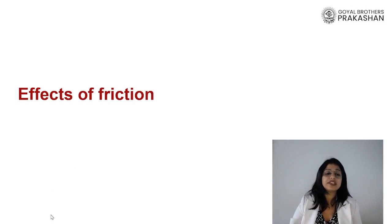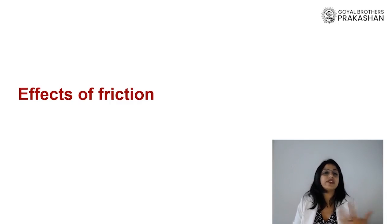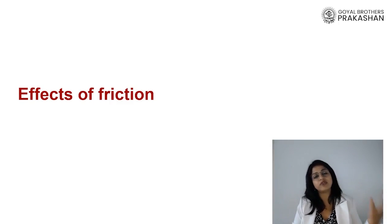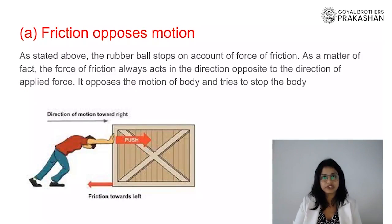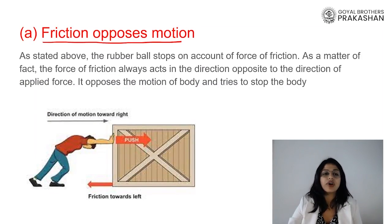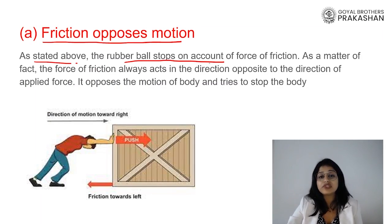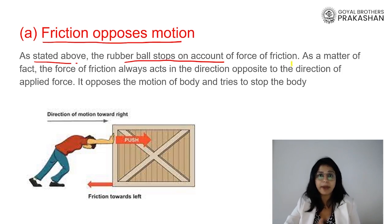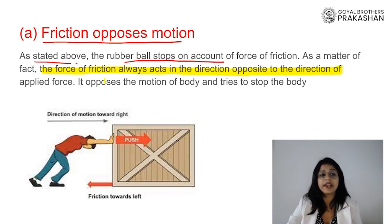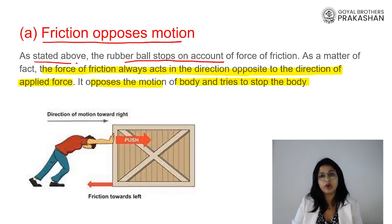Let's now understand certain effects of friction. Friction is going to be there whether we want it or not — any two surfaces in contact will always have a force opposing the applied force, which is called friction. The first effect is that it opposes motion. Friction is the force always acting opposite to the applied force, trying to oppose motion. For example, a rubber ball eventually stops due to friction, or a bicycle stops when you stop pedaling.